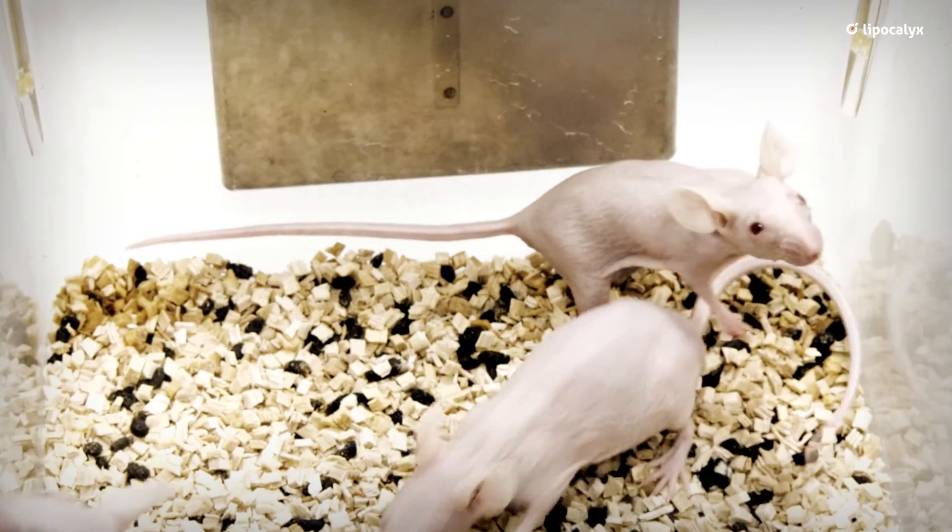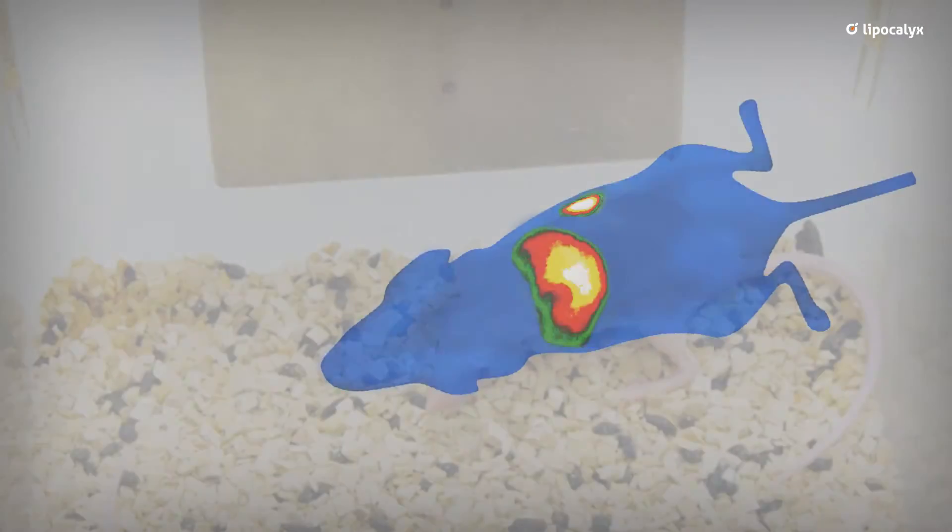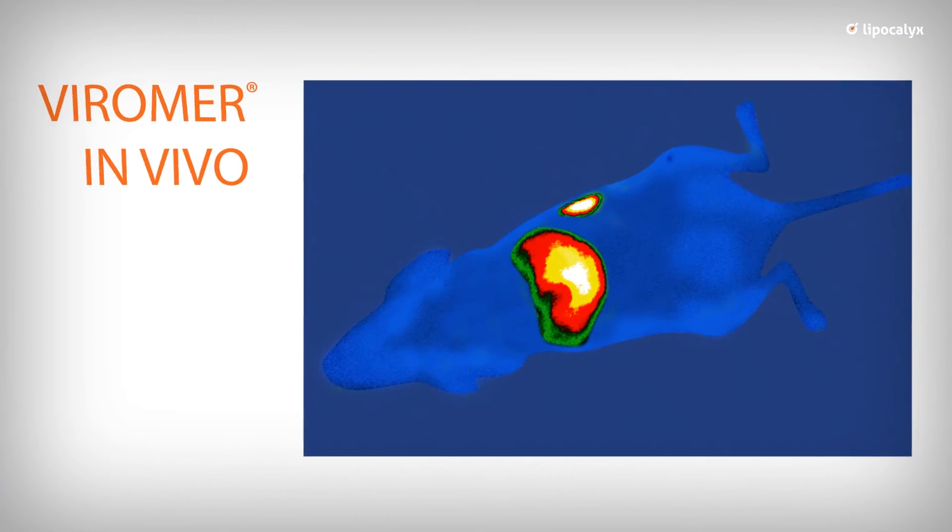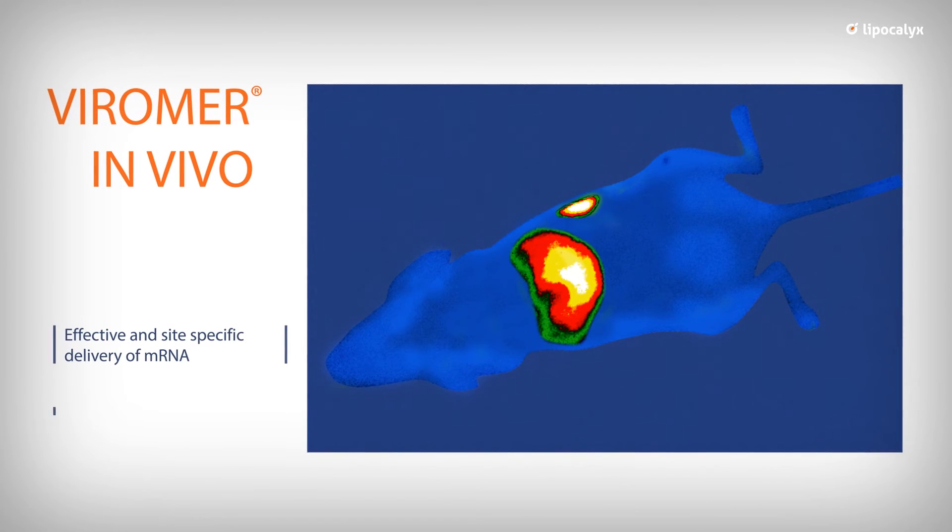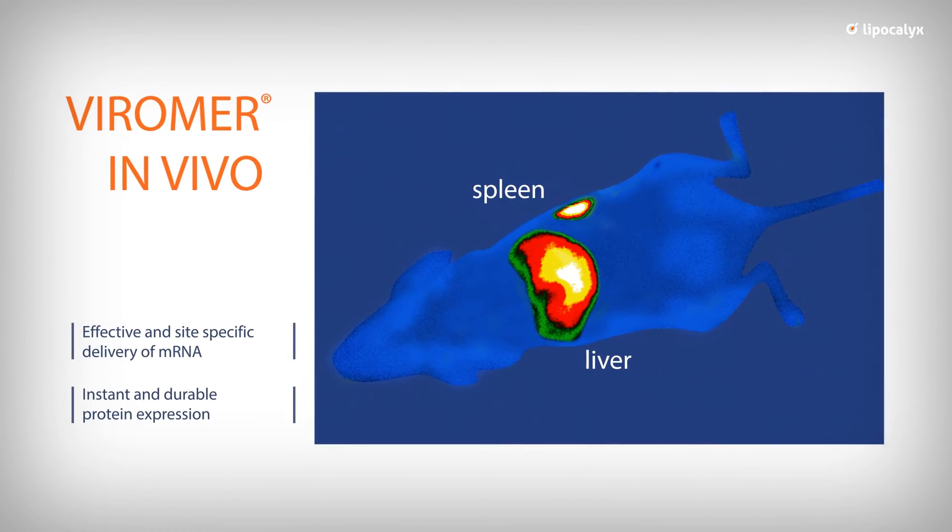But there is more. Viromers can achieve transfection in vivo. Ongoing preclinical work has shown transfection of messenger RNA and expression of transgene proteins in spleen, liver, muscles, and into the skin.